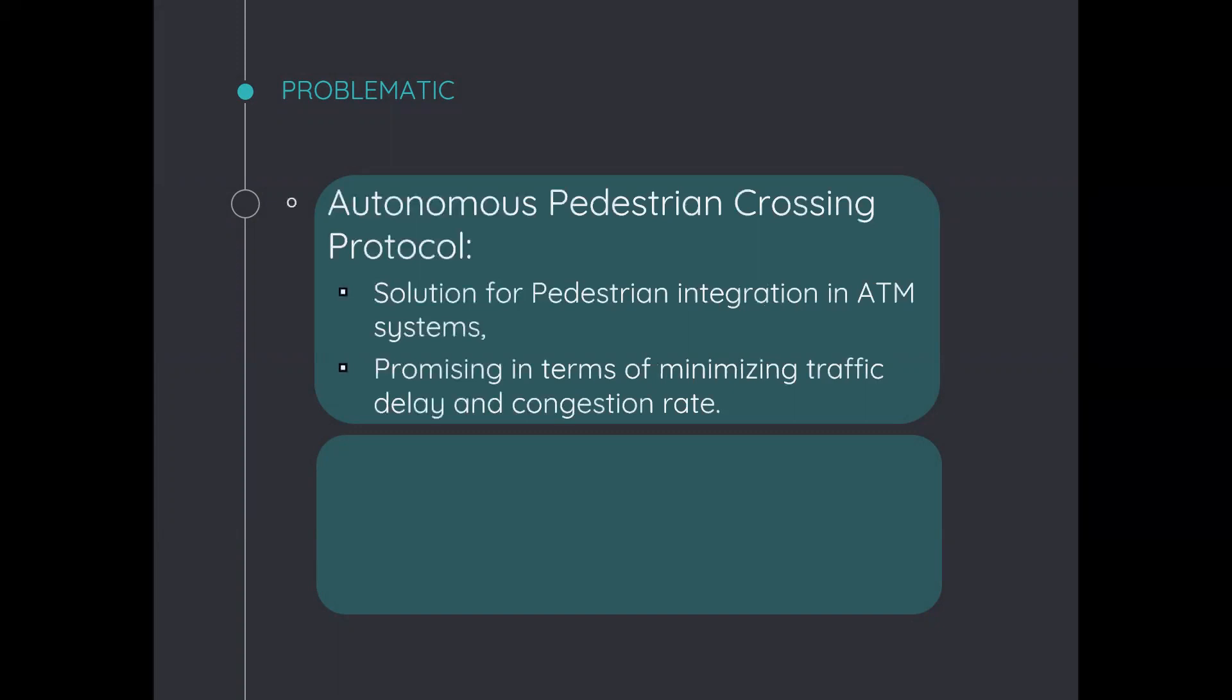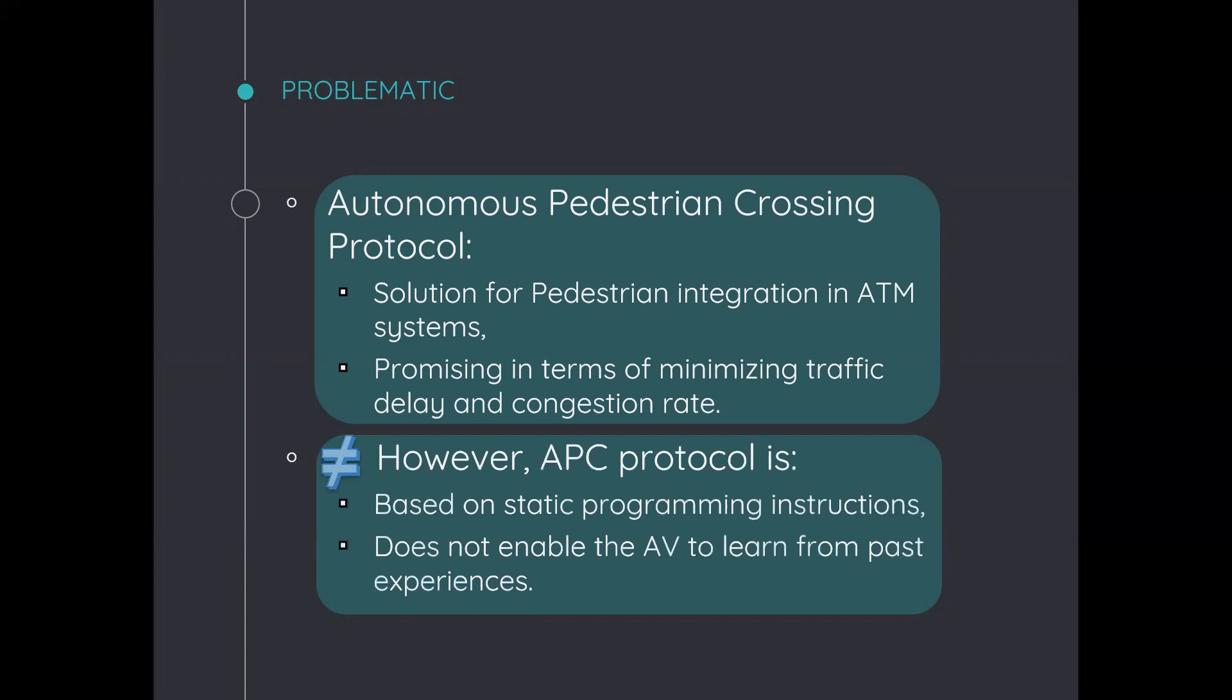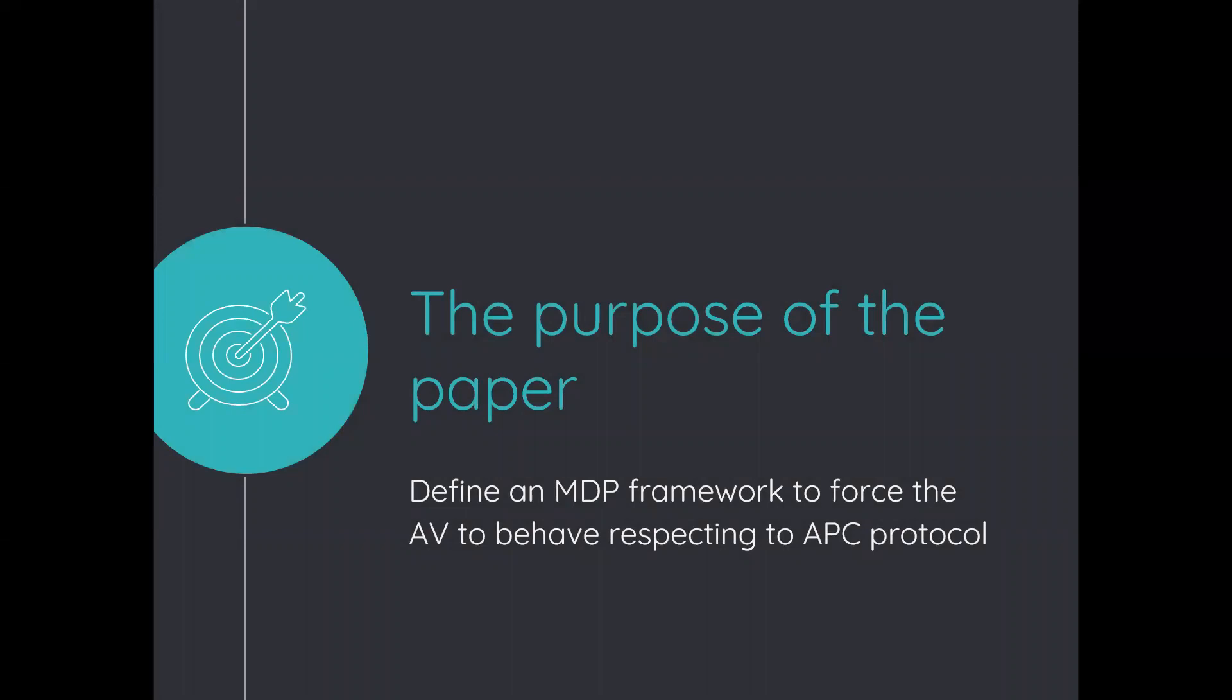In this context, the problematic of our paper is focused mainly on autonomous pedestrian crossing protocol, which is a promising solution for pedestrian integration in autonomous traffic management systems in terms of minimizing traffic delay and congestion rate. However, the main limitation of this protocol is that it is based on static programming instructions, which does not enable the autonomous vehicles to learn from past experiences. So, the purpose of our paper is to define an MDP framework that forces the autonomous vehicle to behave respecting autonomous pedestrian crossing protocol.